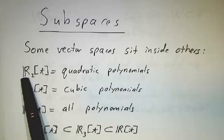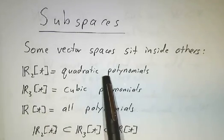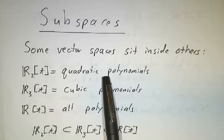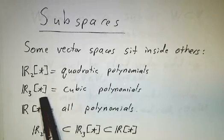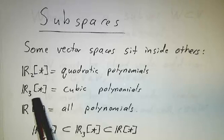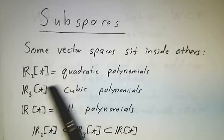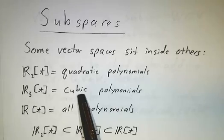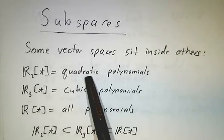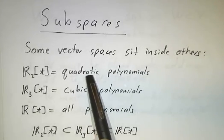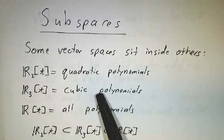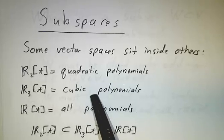If you let R₂(t) be the set of all quadratic polynomials — all things of the form a + bt + ct² — and you let R₃(t) be all cubic polynomials — all things of the form a + bt + ct² + dt³ — then you realize that every quadratic polynomial is also a cubic polynomial. For example, t² + 7 is the same as 0·t³ + t² + 7; it's just a cubic polynomial where the t³ term is 0.